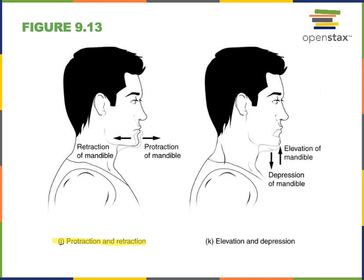Finally, we see the example of elevation and depression. Elevation means to raise vertically in the superior direction. Elevation of the mandible is closing the jaw. To open the jaw is depression — lowering the jaw inferiorly. Depression of the mandible opens the mouth, and elevation of the mandible closes the jaw.